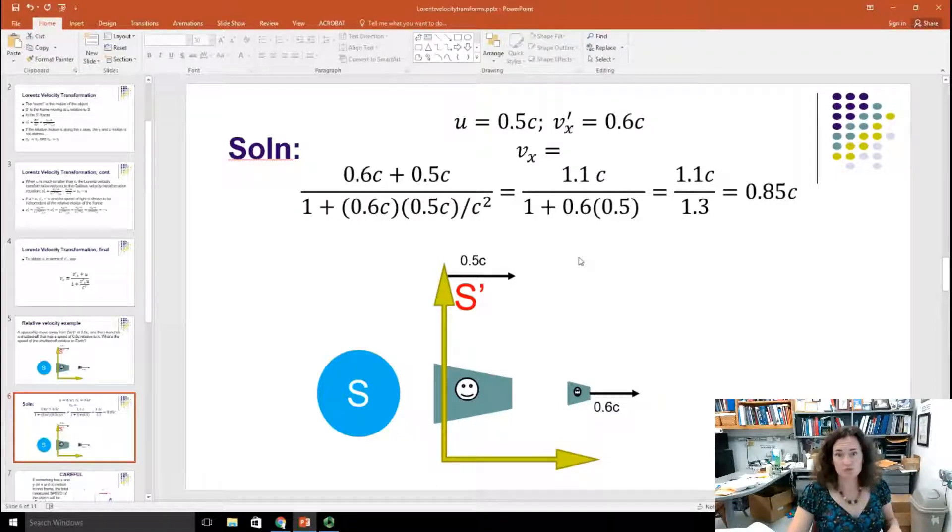Note that Galilean relativity would predict the top of this fraction right here, 1.1c, or 110% the speed of light for the speed of that shuttlecraft, obviously exceeding the speed of light, which is forbidden.